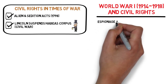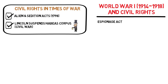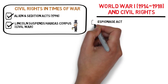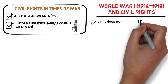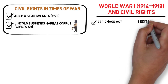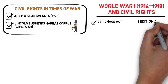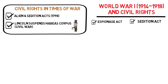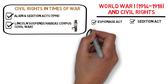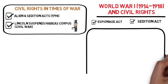In 1917, Congress passed two laws that limited civil liberties. The Espionage Act made it illegal to aid the enemy, give false reports, or to interfere with the war effort. In addition, the Sedition Act made it illegal to speak out against the war publicly.